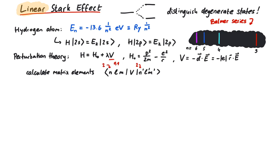If we want to investigate the n equal two states, we need to calculate matrix elements of v with the n equal two states. To save us some time, the only non-zero results arise from the two s and those two p states with m equal zero.